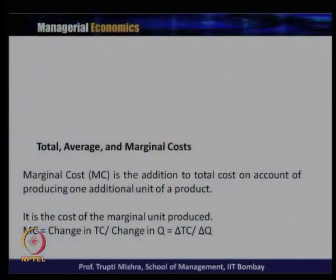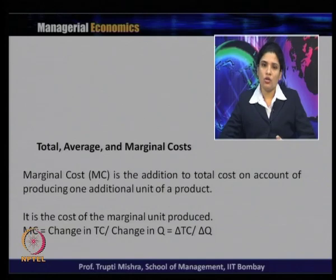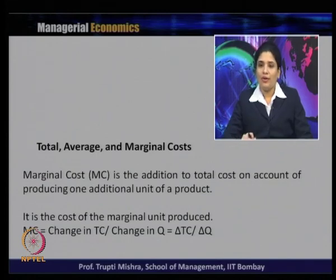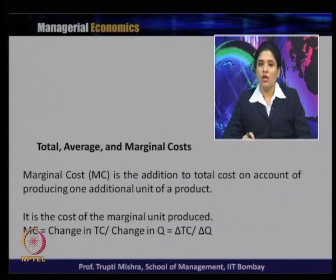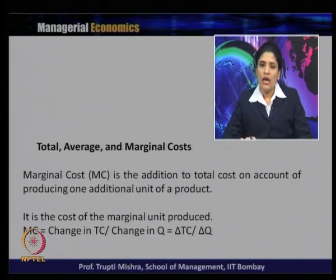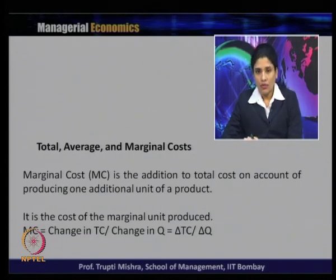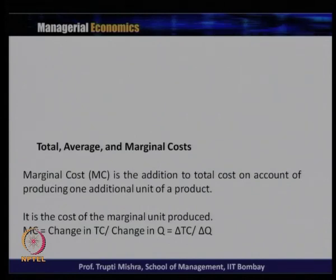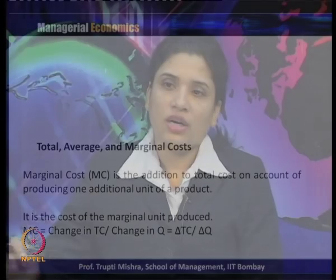Marginal cost: whenever the concept of marginal comes, it is the addition to the total cost when producing one more additional unit of output. Marginal cost is the difference between the total cost at the previous unit of production and the current unit of production. It is the cost of the marginal unit produced. Marginal cost MC = ΔTC / ΔQ, where TC is the total cost and Q is the unit of output.